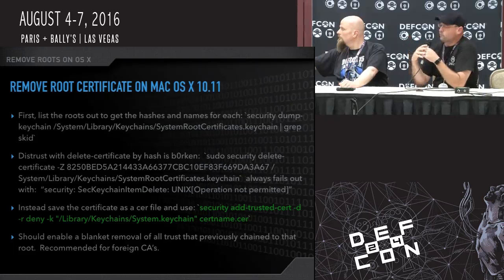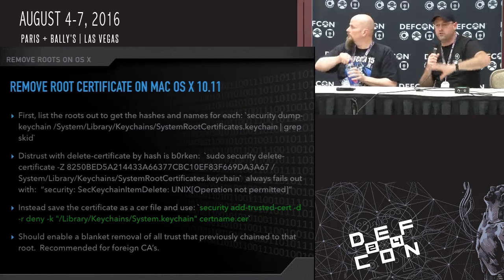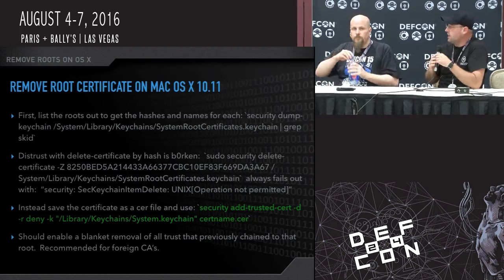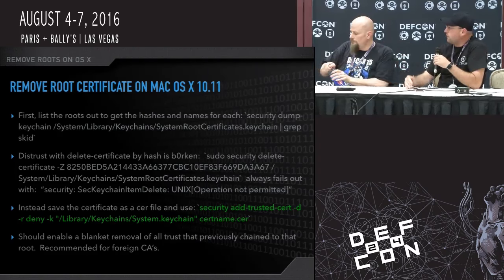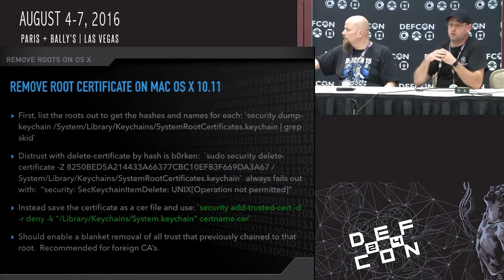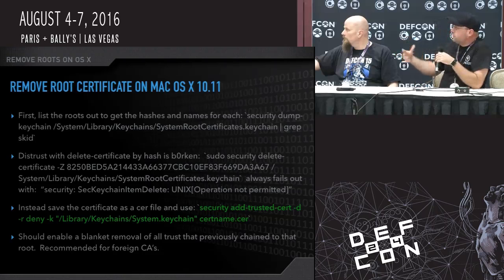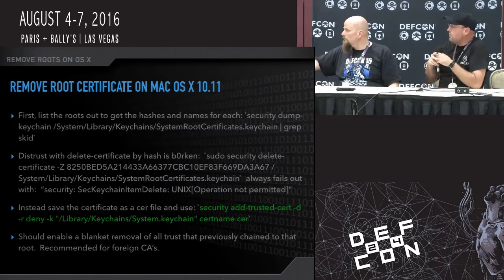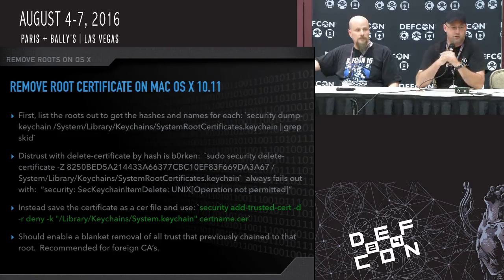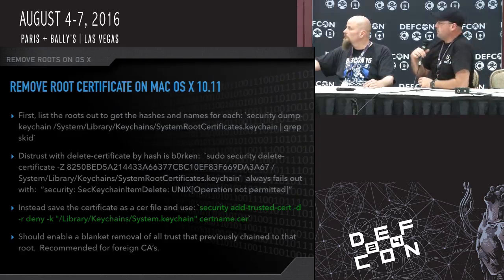Removing a root is not the same as revocation. Revocation happens between the intermediates and the leaves. But to manually trust or distrust for the whole chain, you can take a root certificate and run 'security add-trusted-cert -deny', and that certificate and everything chained to it will no longer be trusted. With this command you could remove trust for certificates from Turkey or China. With only about 180 roots in the OS, dropping a major one like VeriSign could break a third of your connections, so you have to be careful.